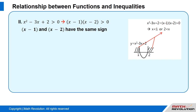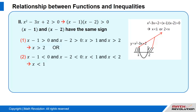This means that the factors (x minus 1) and (x minus 2) have the same sign. That is: x minus 1 is greater than 0 and x minus 2 is greater than 0, or x minus 1 is smaller than 0 and x minus 2 is smaller than 0.